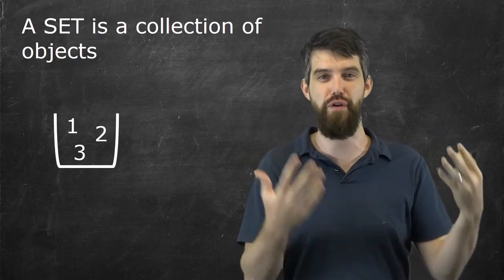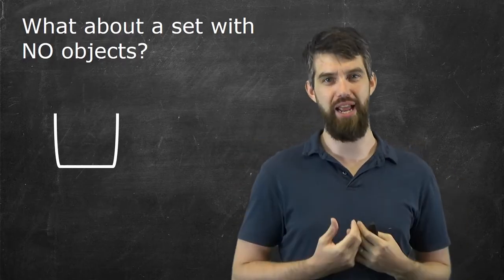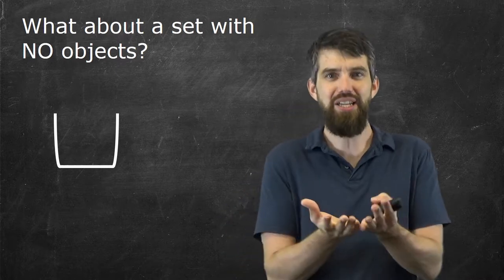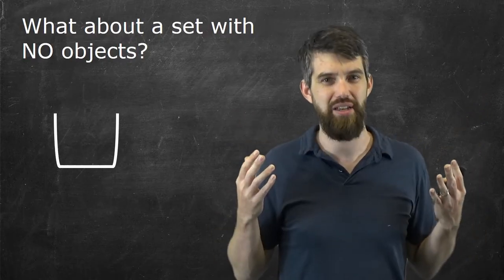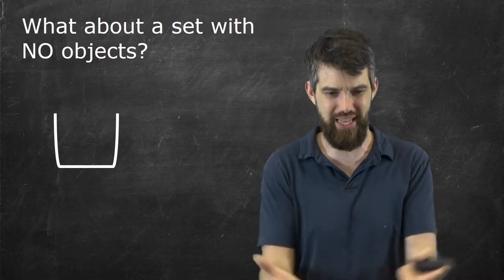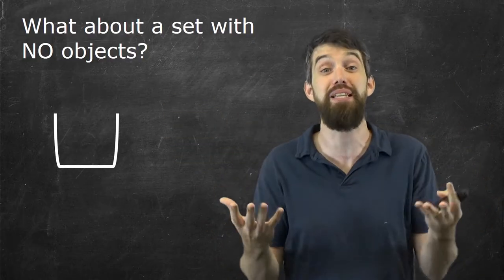A set is just a collection of objects. Well, what about a set with no objects in it? What exactly is that? Intuitively, I'm thinking about it as it's still a collection, but it's a collection of no objects. You still have the bag there, if you will. You still have the box there, but there's just nothing inside of it. It's an empty box, or it's an empty set.